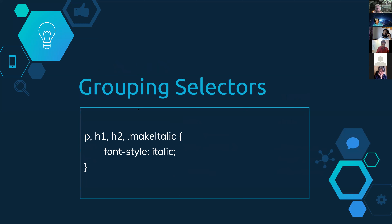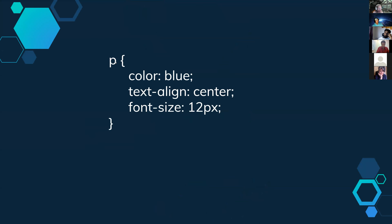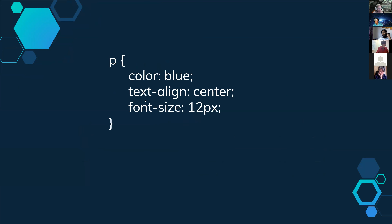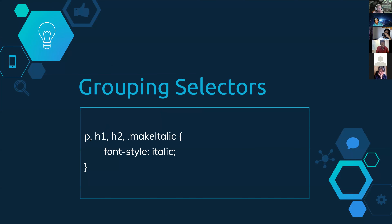You can also group selectors — instead of rewriting styles for P tags and then again for H1 tags, you can group them. Put a comma between selectors: P comma H1 comma span comma a class — you can keep going with more selectors — and apply the same styling to a group of elements. So you can kind of group them together and apply the same styling to multiple elements at once.